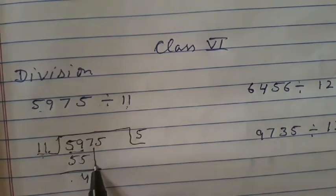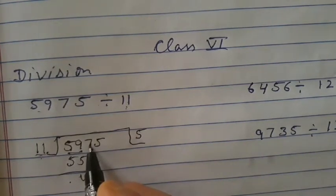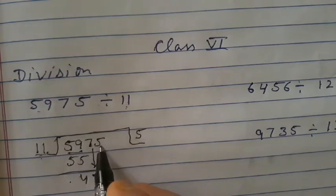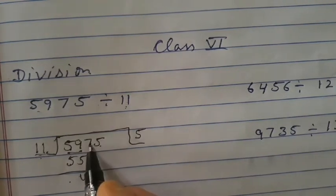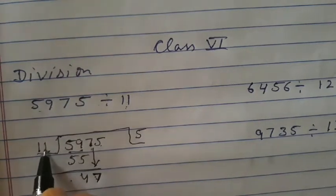Now take 7 here. You have to take a digit one by one. So therefore, first of all, you will take the 7 here: 47. Now read the table of 11: 11 times 4 is 44, 11 times 5 is 55, which is greater.